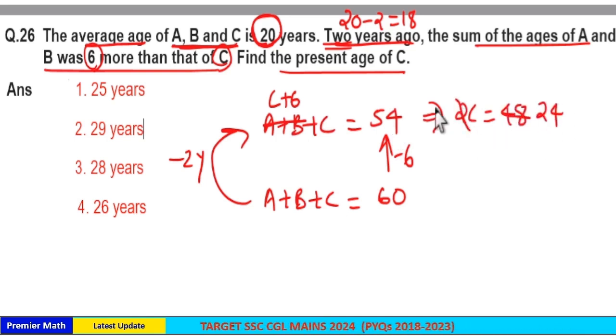So, C is 24 2 years ago. Which means, presently, C is equal to 24 plus 2, 26. Present age of C is equal to 26. Option 4 is your answer.